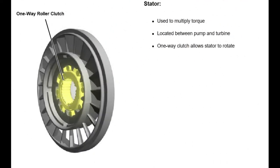The stator assembly is used to multiply torque to launch the vehicle. The component is located between the pump assembly and the turbine assembly and is mounted on a one-way roller clutch. The one-way roller clutch allows the stator to rotate in one direction and prevents it from rotating in the other direction.